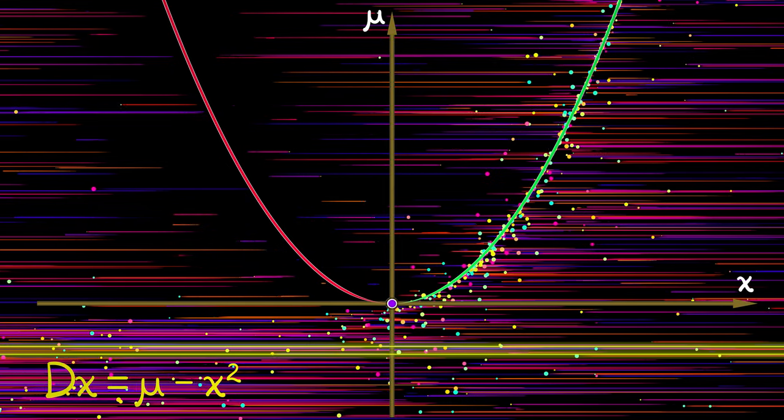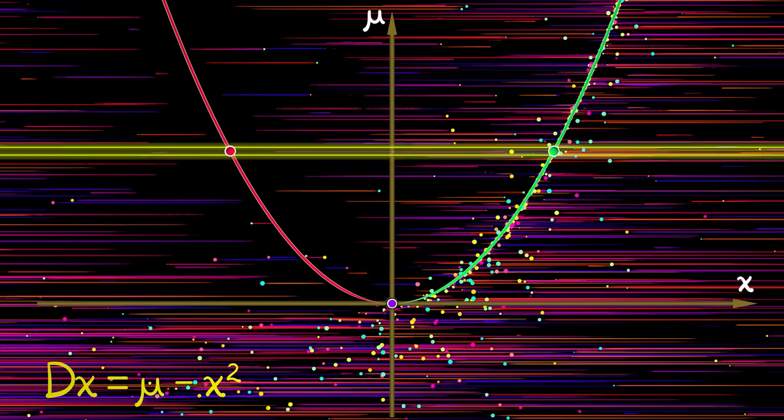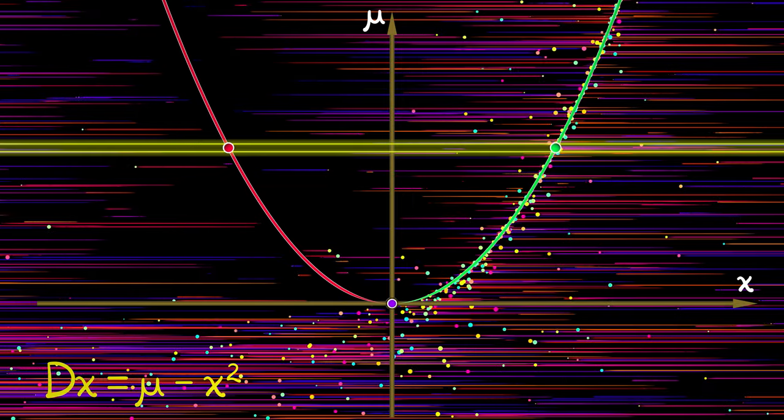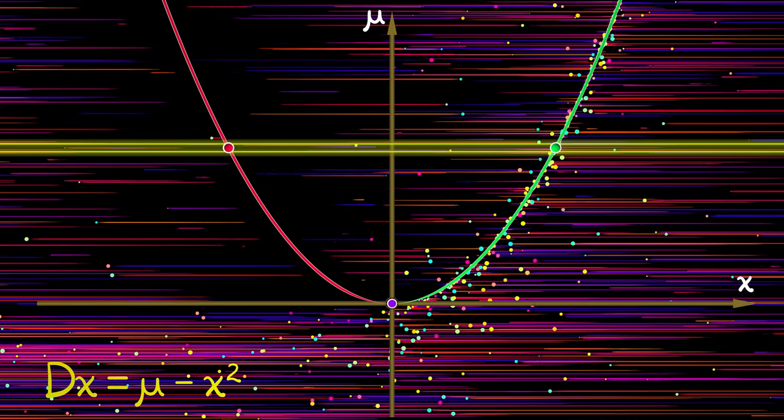When mu is positive, then you have a pair of equilibria. One stable, one unstable.